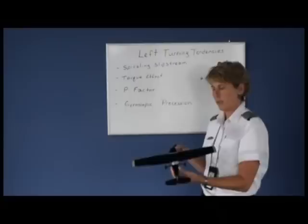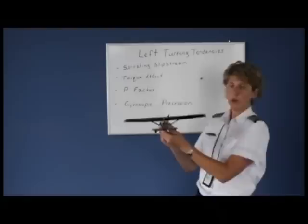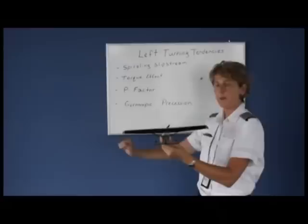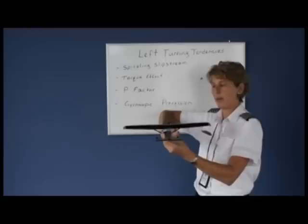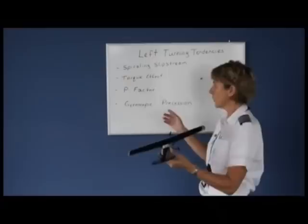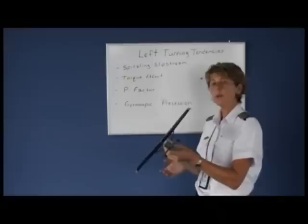The more horsepower your engine has, the more torque effect it's going to have, the more right rudder you would need on takeoff. Now in the air, let's say you had your RPM set on 2,100 RPMs and you suddenly increase the throttle. When you increase the throttle, you're increasing the torque on the engine, which in return turns the propeller and causes your airplane to start a slight roll in the opposite direction. So torque effect is a yawing motion on the ground and a rolling motion in the air.